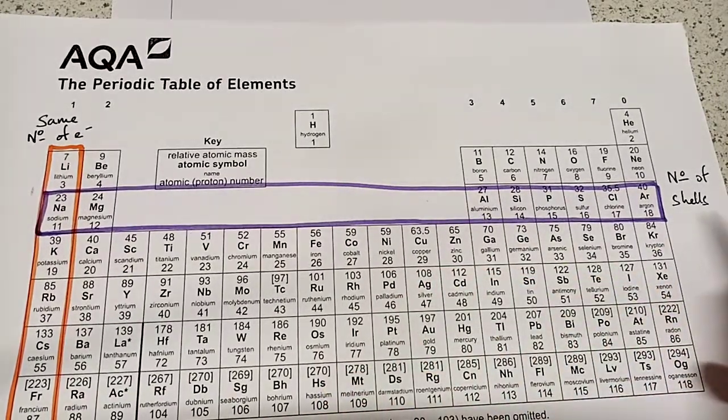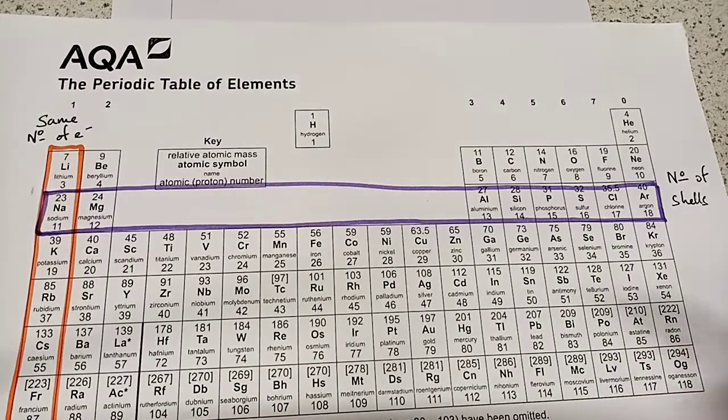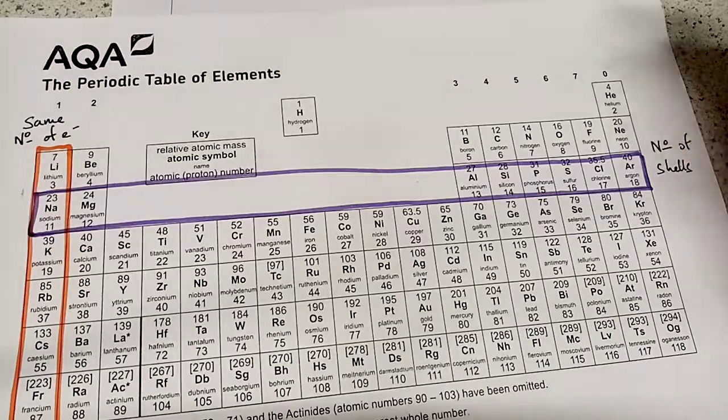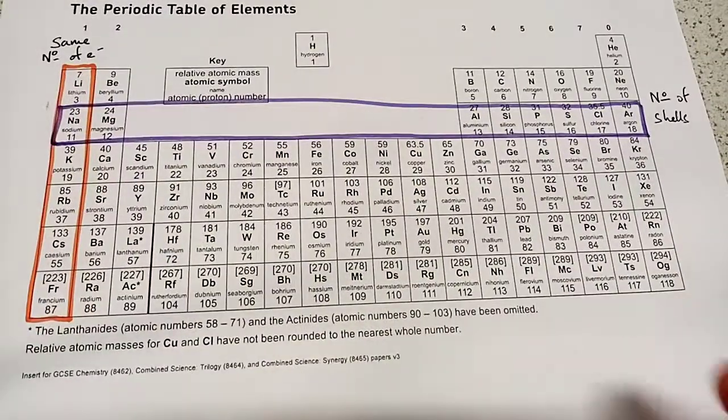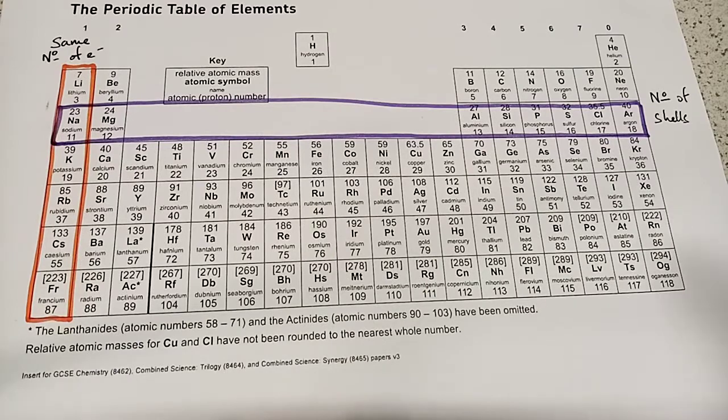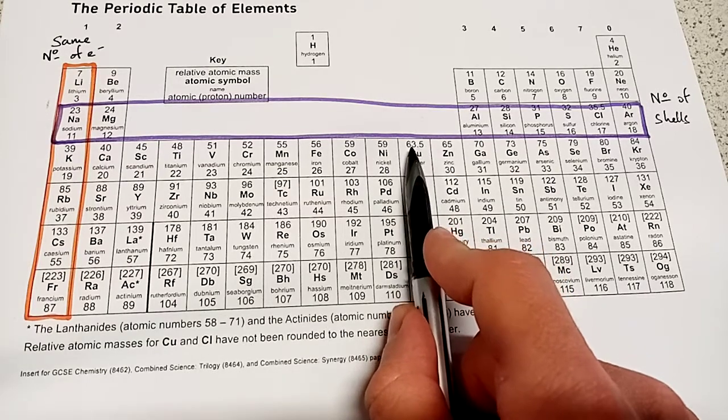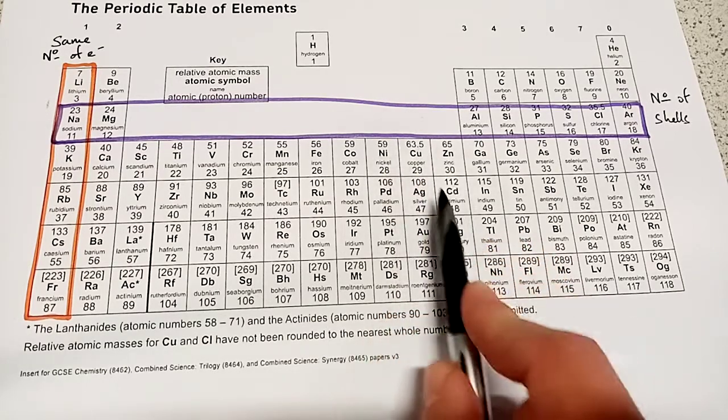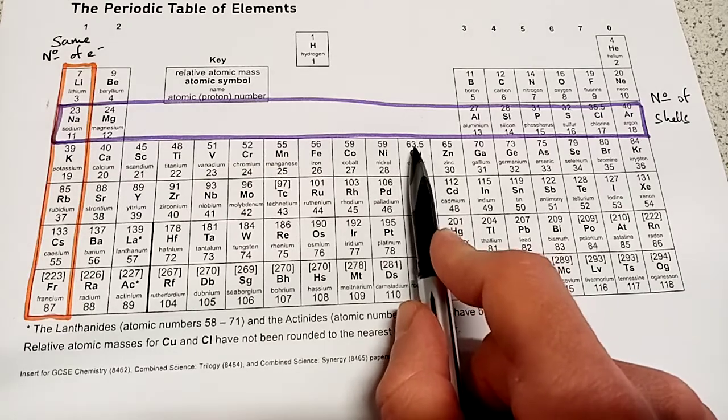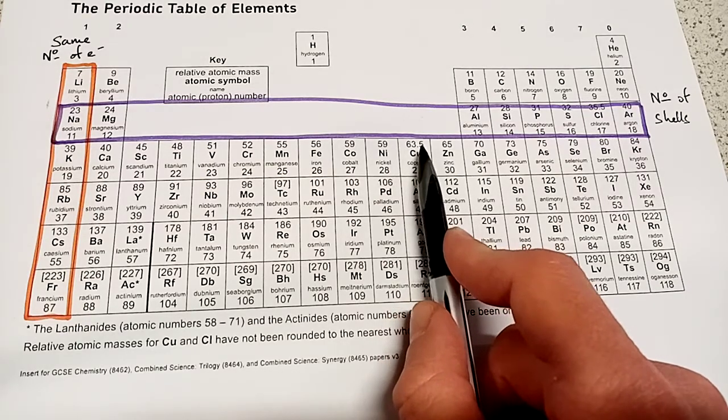The only thing that changes is the number of electrons in the outer shell. Now what you notice about some particular elements in the periodic table is that they have a slightly strange number as their relative atomic mass. So copper for example has got a relative atomic mass of 63.5.